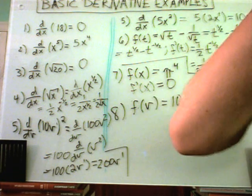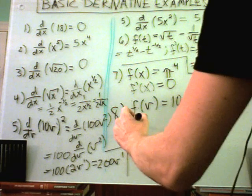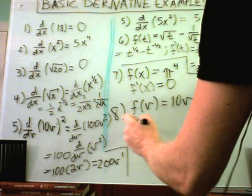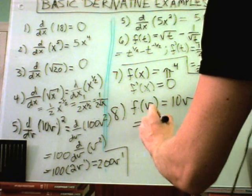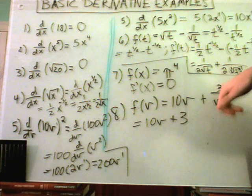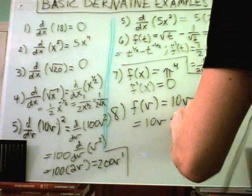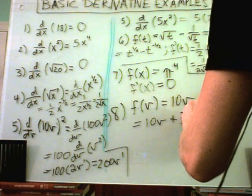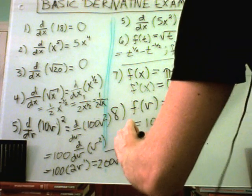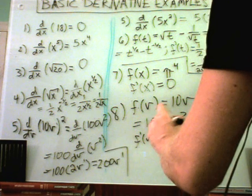Last but not least, another example similar to number six. I like to rewrite them first. So my 10v I'll leave alone, but I'll write my 3 over v to the fourth, I'll bring the v to the fourth up as a negative four. And now I'll take the derivative of all this.